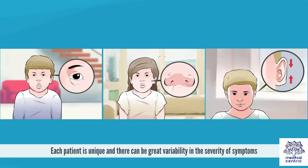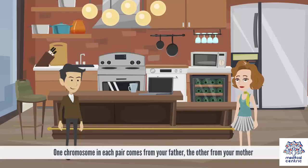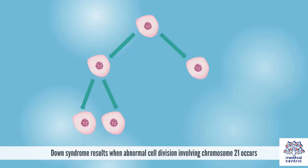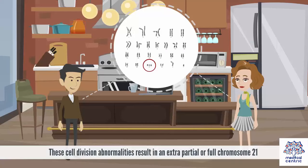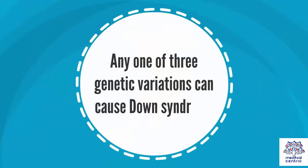Causes: Human cells normally contain 23 pairs of chromosomes. One chromosome in each pair comes from your father, and the other from your mother. Down syndrome results when abnormal cell division involving chromosome 21 occurs, resulting in extra partial or full chromosome 21. This extra genetic material is responsible for the characteristic features and developmental problems of Down syndrome. Any one of three genetic variations can cause Down syndrome.